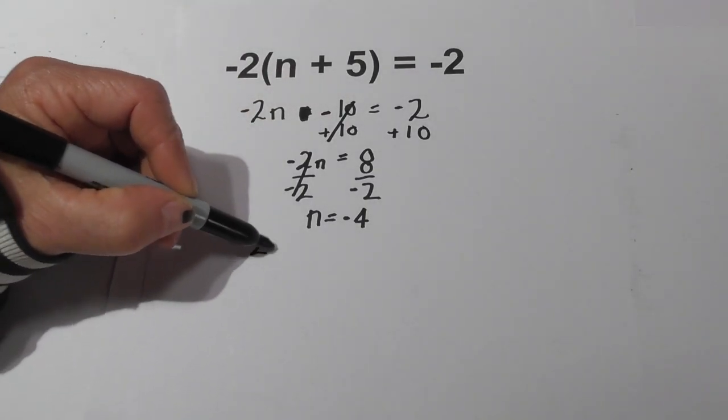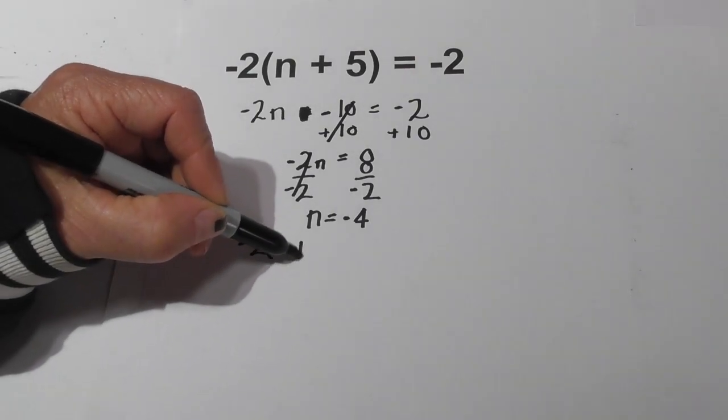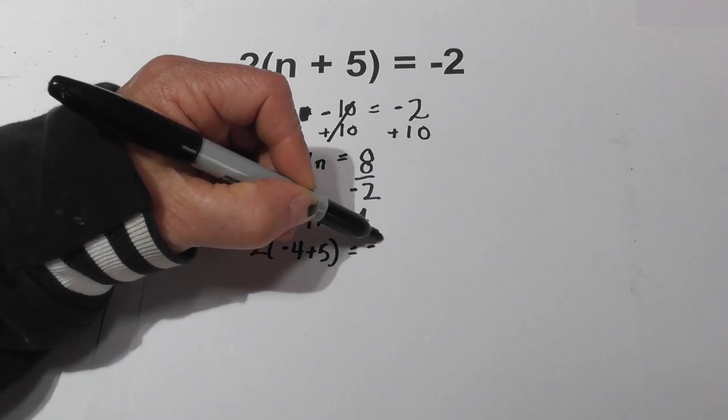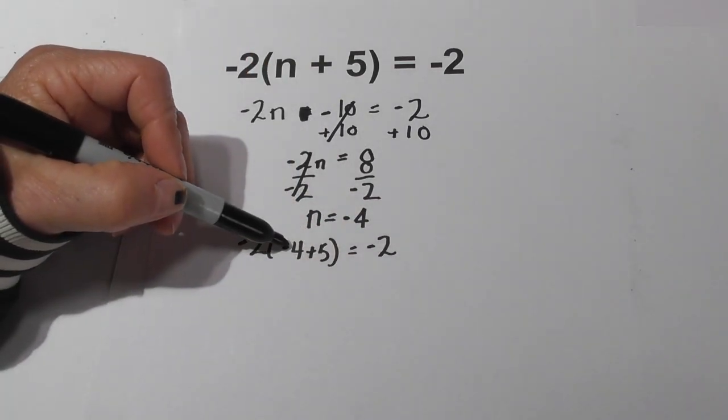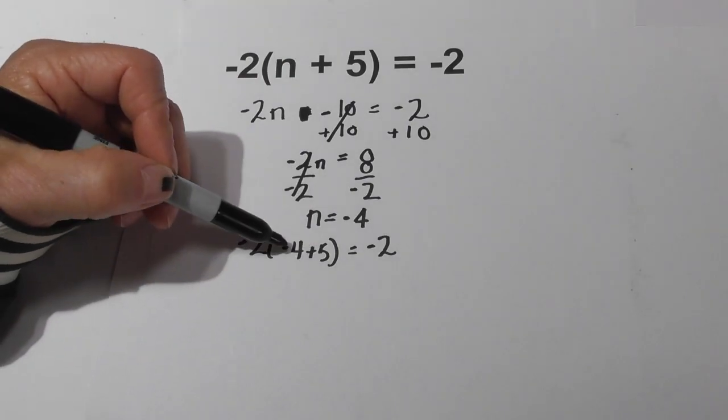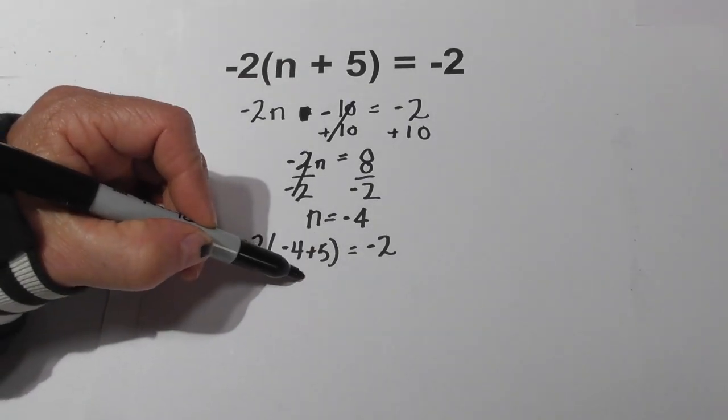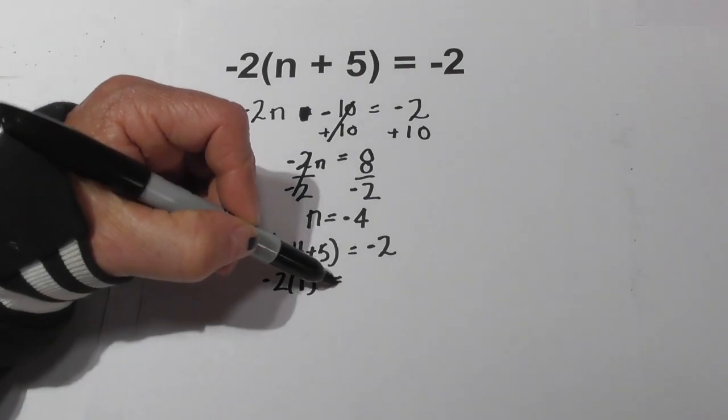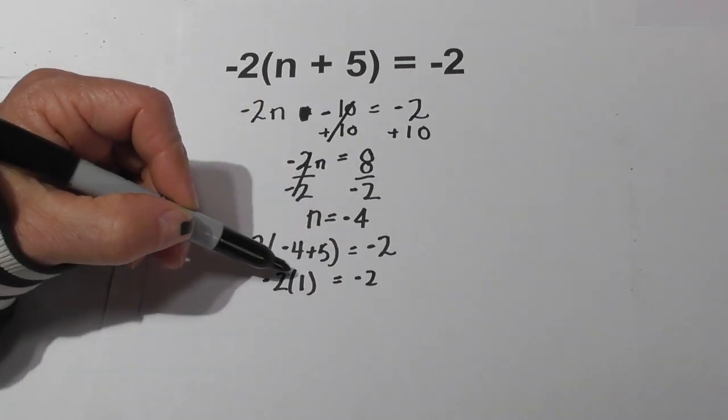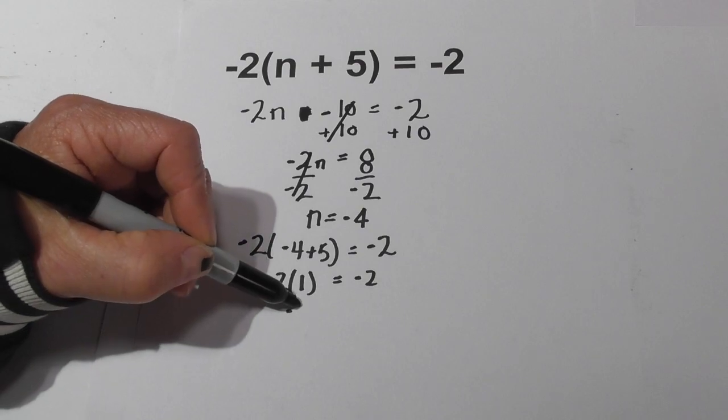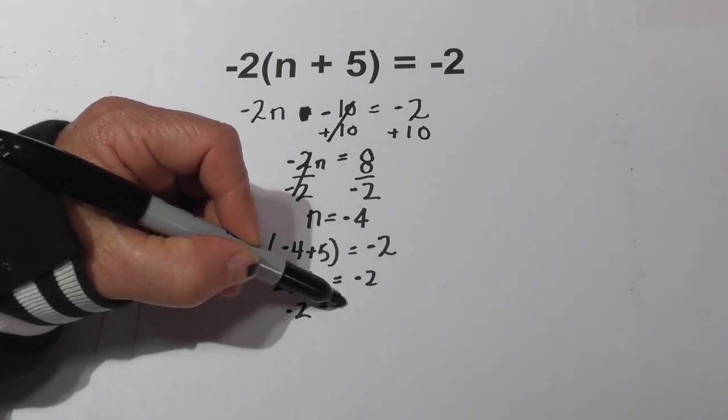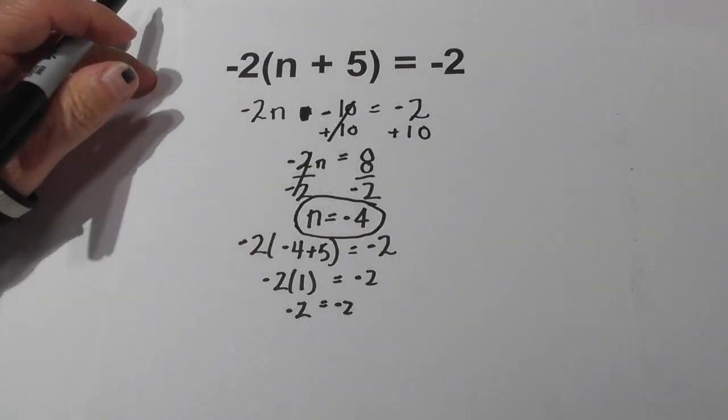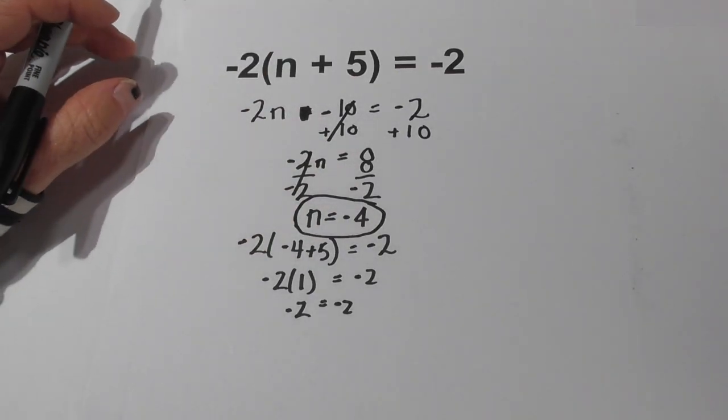We have 2 times (-4 + 5) = -2. Now -4, let's do parentheses first. -4 and 5 is a positive 1. We still have -2 on the outside and that's supposed to equal -2. -2 times a positive 1 is indeed -2 = -2. So the original answer, n = -4, is correct.